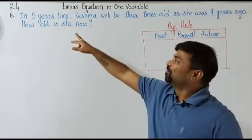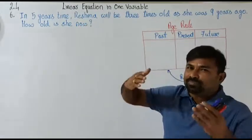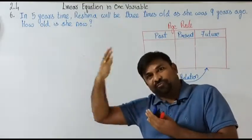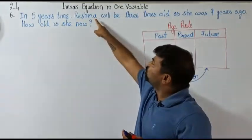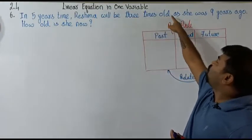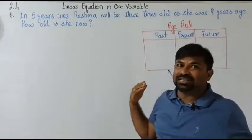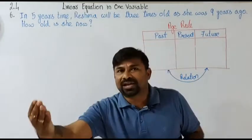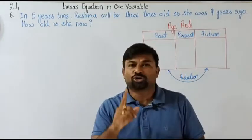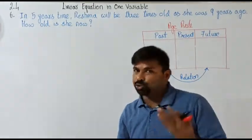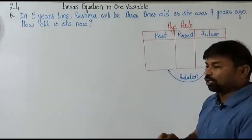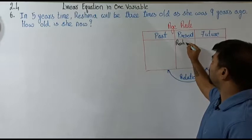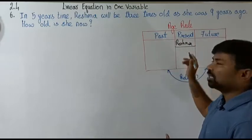Age-related problems generally deal with human ages. The problem is: in five years, Reshma will be three times as old as she was nine years ago. We are talking about a girl by the name Reshma.